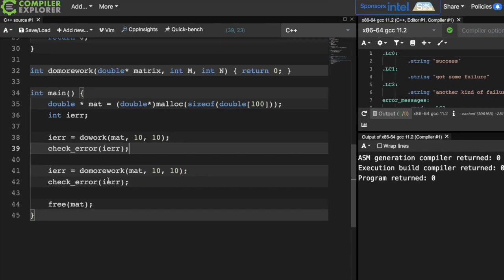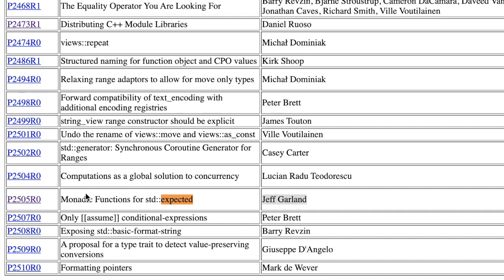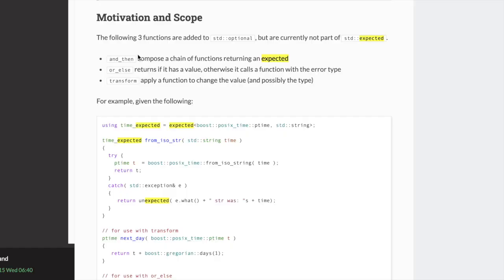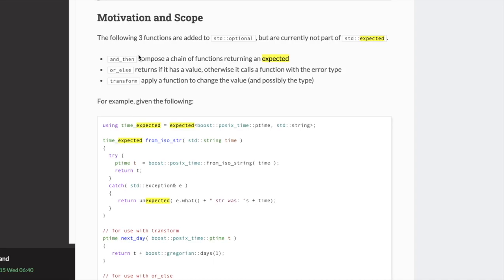In the last year, three papers on std::expected have come through the C++ mailing list. The most recent was from Jeff Garland on extra monadic functions for std::expected. These are and_then, or_else, and transform. We'll just be looking at and_then and or_else today.